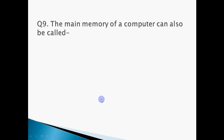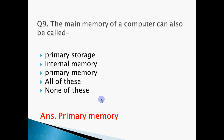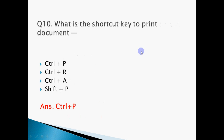Question 9: The main memory of a computer can also be called primary storage, internal memory, primary memory, or all of these. The actual name is primary memory for main memory, and all listed terms are valid — so the answer is all of these.